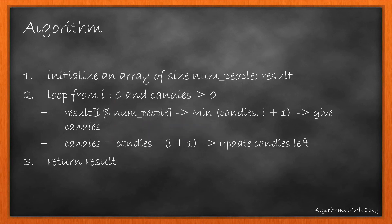We initialize the result array of size num_people. We loop from i=0 while we have candies. We update the result array at index (i mod num_people) with the minimum of candies or i+1, then update the candies left. At the end, we return the result array.